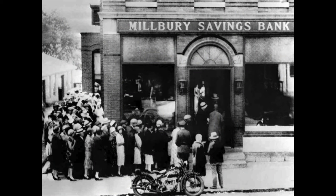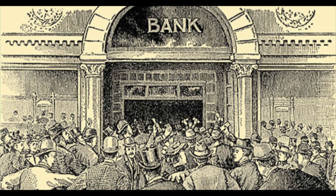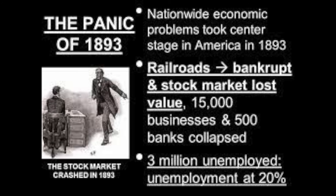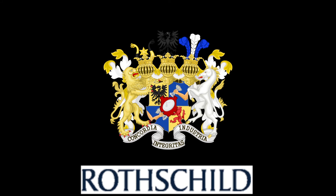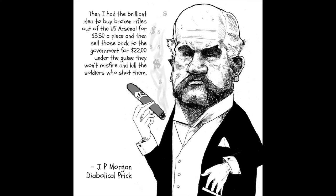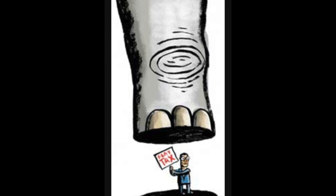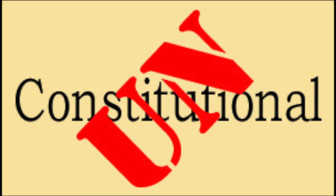People rushed to withdraw their money from the banks in a phenomenon known as bank runs. Stock prices declined, 500 banks closed, and 15,000 businesses failed. Unemployment rates rose to as much as 43% in some states. To ease the pain of this depression, President Grover Cleveland resorted to borrowing $65 million in gold from the Rothschild banking family of England, and a U.S. banker by the name of J.P. Morgan, a man who had paid a replacement to serve in his stead during the Civil War and made profits selling defective rifles to the Union Army. In 1894, Congress enacted a flat-rate federal income tax, but it was ruled unconstitutional a year later by the Supreme Court.